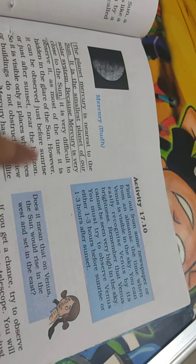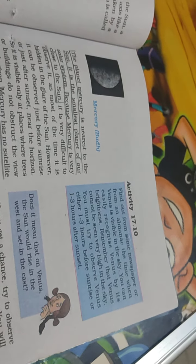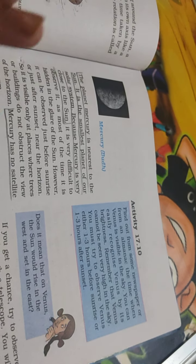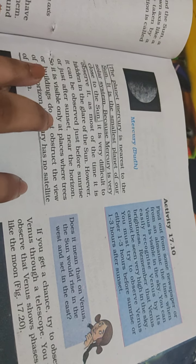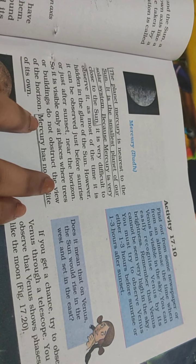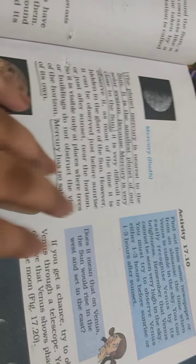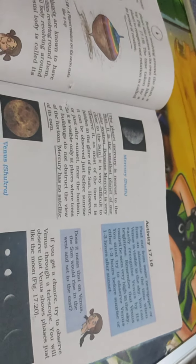Mercury can be observed just before sunrise or just after sunset. It is visible only at places where trees or buildings do not obstruct the view of the horizon.